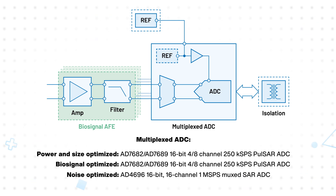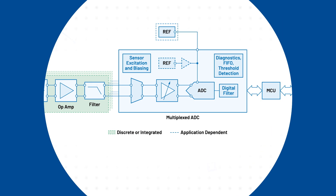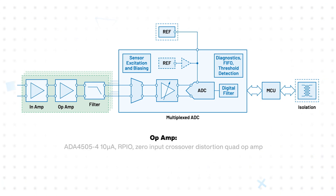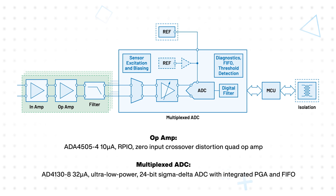ADI offers a variety of options to provide the sample rate and channel count needed in different applications. For an ultra low power, high precision measurement platform that supports multiple sensing modalities, designers can leverage a multiplexed ADC that integrates both a high level of analog functionality and digital diagnostics functionality, with support for additional external amplification stages.